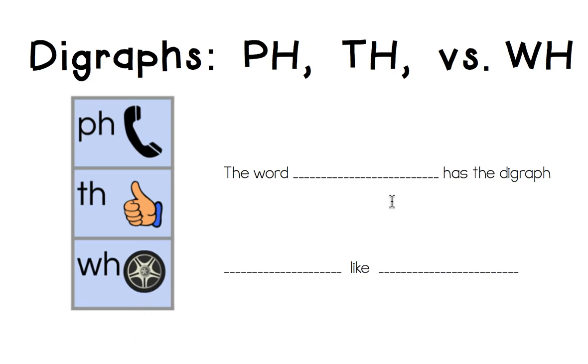I'm going to go ahead and give you an example. Before I give you an example, we're going to look at the sentence that you're going to use to explain your thinking. The word mm has a digraph mm like mm.